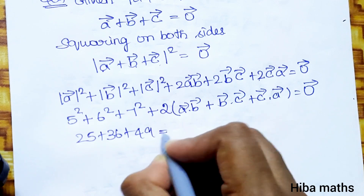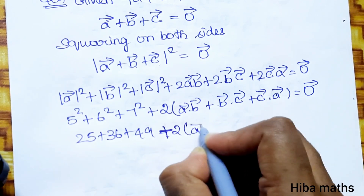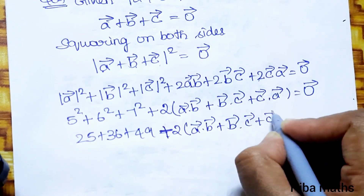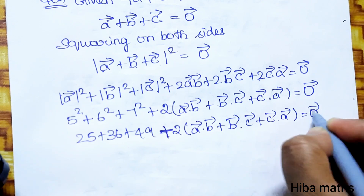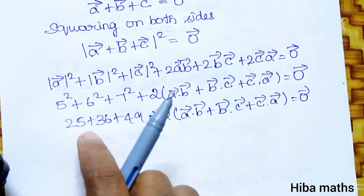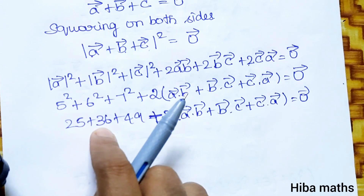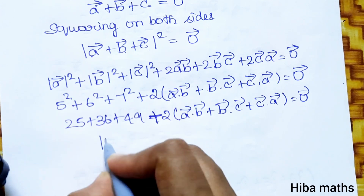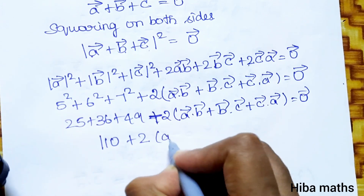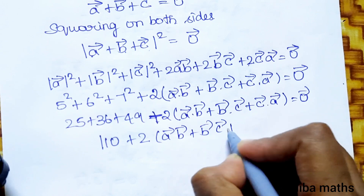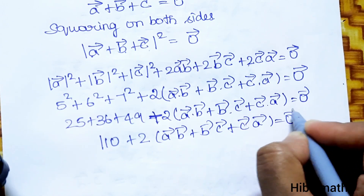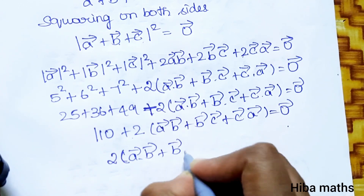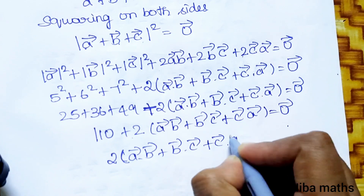Now adding all the numbers: 25 plus 36 plus 49 gives us 110. So 110 plus 2 times (a vector dot b vector plus b vector dot c vector plus c vector dot a vector) is equal to zero.